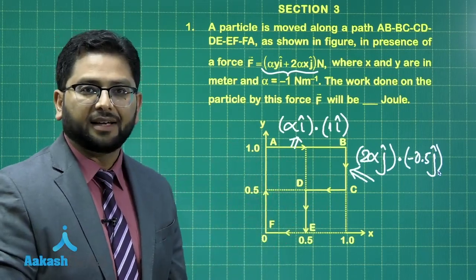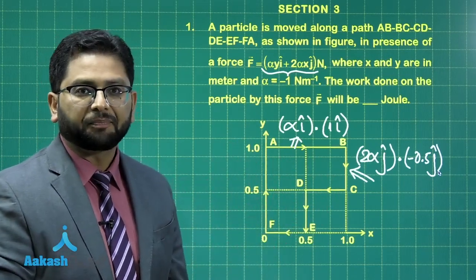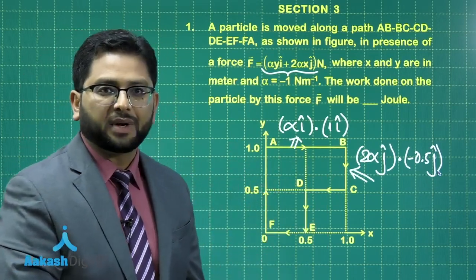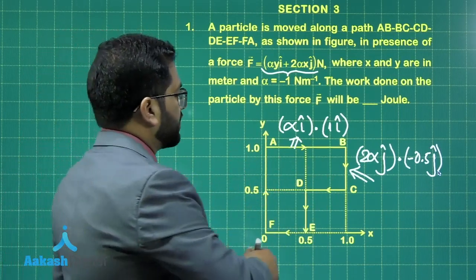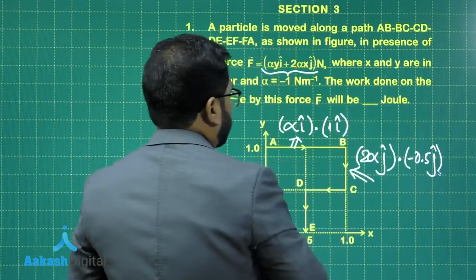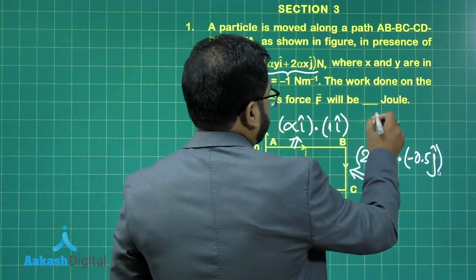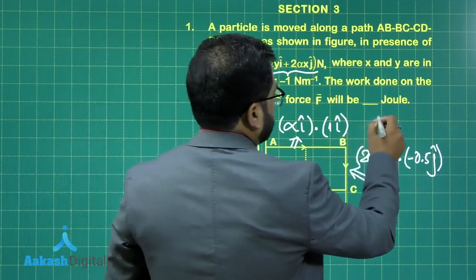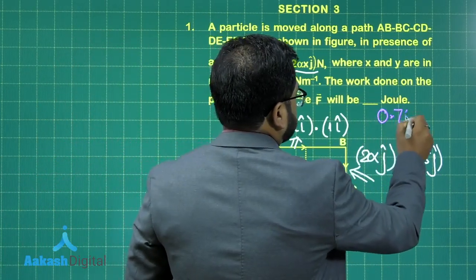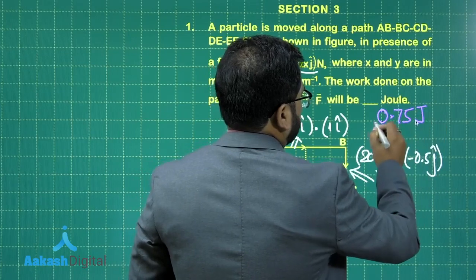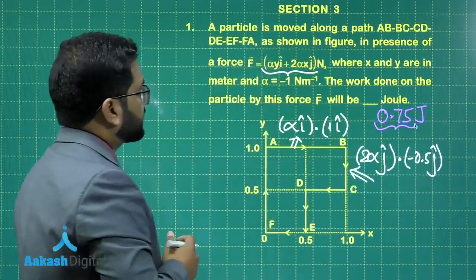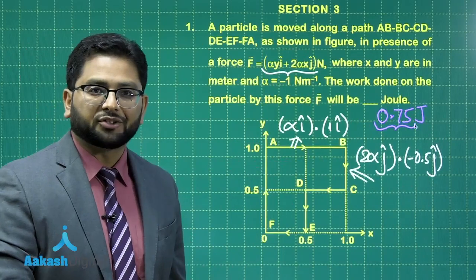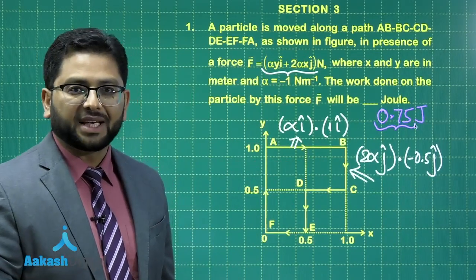Solve all those segments following the same pattern, and at the end put α as minus one. The correct answer for this first question of Section 3 would be 0.75 J.